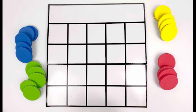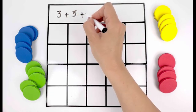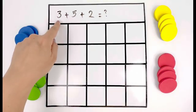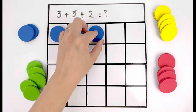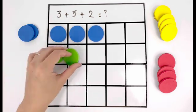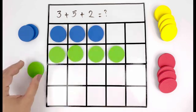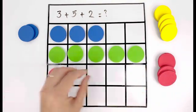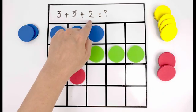This time let's use plus sign twice. Three plus five plus two equals. Three is our first number, one, two, three. Plus five, one, two, three, four, five. Plus two, one, two.